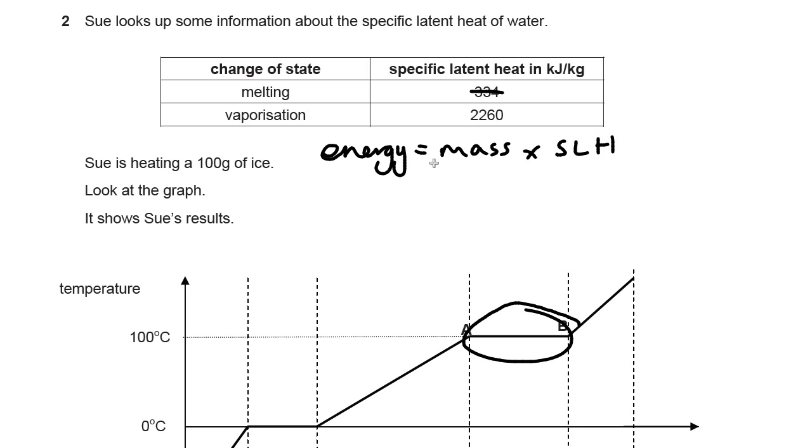So you've got that data, that's the specific latent heat there, and that is the mass there. All you need to do is put the mass in there and the specific latent heat in there.